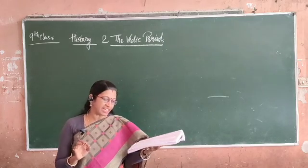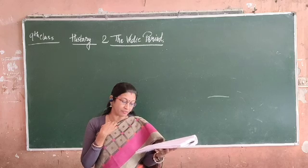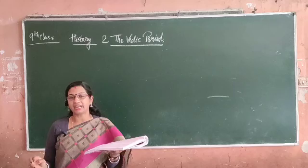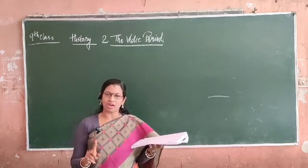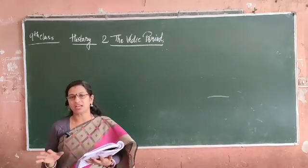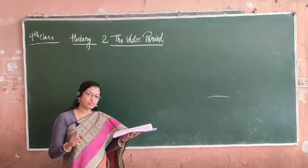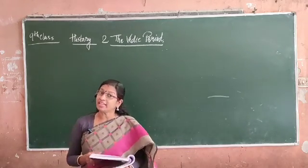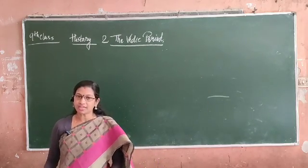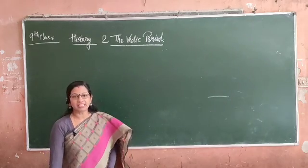The Puranas: there are 18 Puranas in number and each of them has five sections. Out of these five sections, the fifth section is the most important in each of the 18 Puranas, because it discusses the kings and their dynasties.